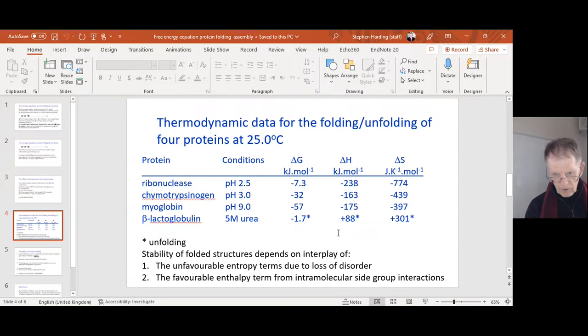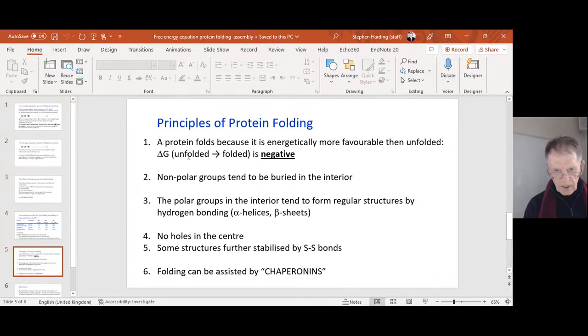These are the principles of protein folding which Phillips alluded to in that video clip. Protein folds because it's more favorable to be folded than unfolded from an energetic point of view—delta G is negative. Non-polar groups tend to be buried in the interior. The polar groups in the interior tend to form regular structures by the formation of hydrogen bonding—alpha helices and beta sheets—to compensate for the presence of these hydrophilic residues so they're shielded from the hydrophobic groups. There are usually no holes in the center of a molecule.